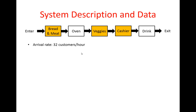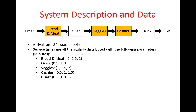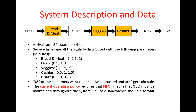As for the data for this problem, the arrival rate is 32 customers per hour and service times are all triangularly distributed with the parameters shown here. 70% of customers want their sandwich toasted, and 30% will get cold sandwiches. However, the current policy requires that we maintain FIFO throughout the system. In other words, customers that get cold sandwiches still need to wait in the queue at the oven station for those customers waiting for their sandwich to be toasted. So passing is not allowed in the current operating policy.